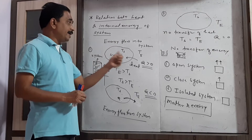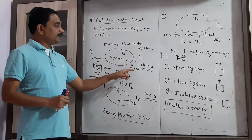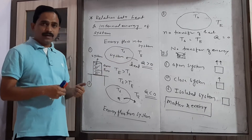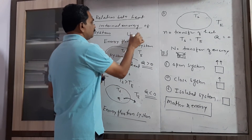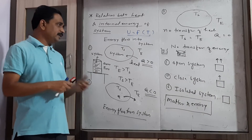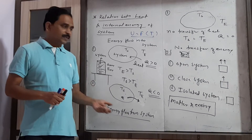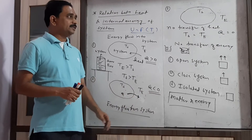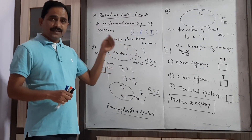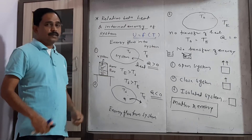Internal energy is a function of temperature. Because of molecular configuration and heat exchange, if temperature increases then internal energy increases, Q is greater than zero. When heat is released, temperature decreases, internal energy decreases, Q is less than zero. When Q equals zero, internal energy change is zero. This is the first point: the relation between heat and internal energy of the system.